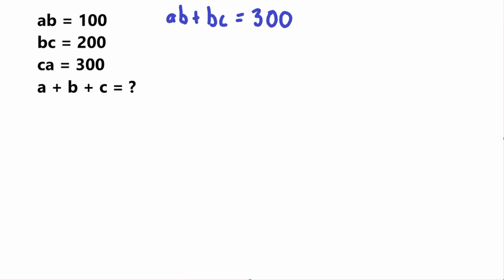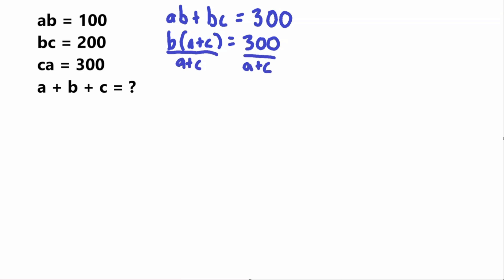In this equation, AB plus BC equals 300, we can factor out the B from these two terms to get that B times (A plus C) is equal to 300. And now, if we divide both sides by A plus C, we get that B is equal to 300 over (A plus C).